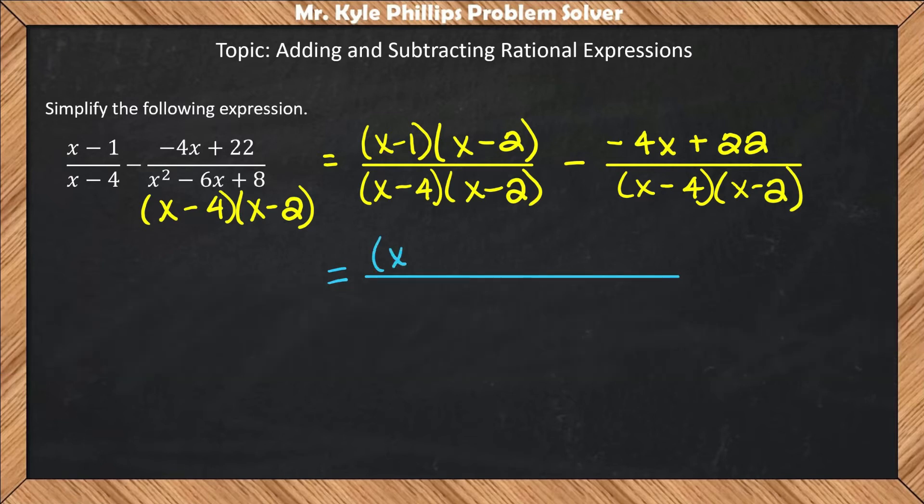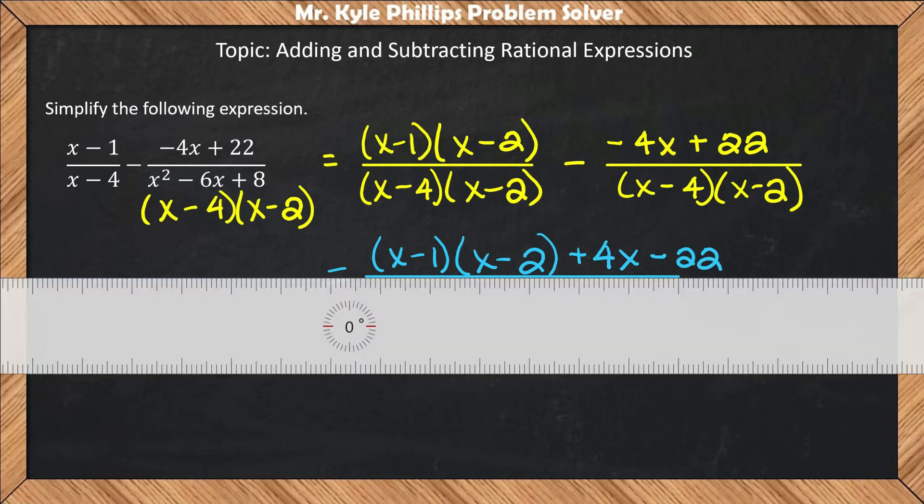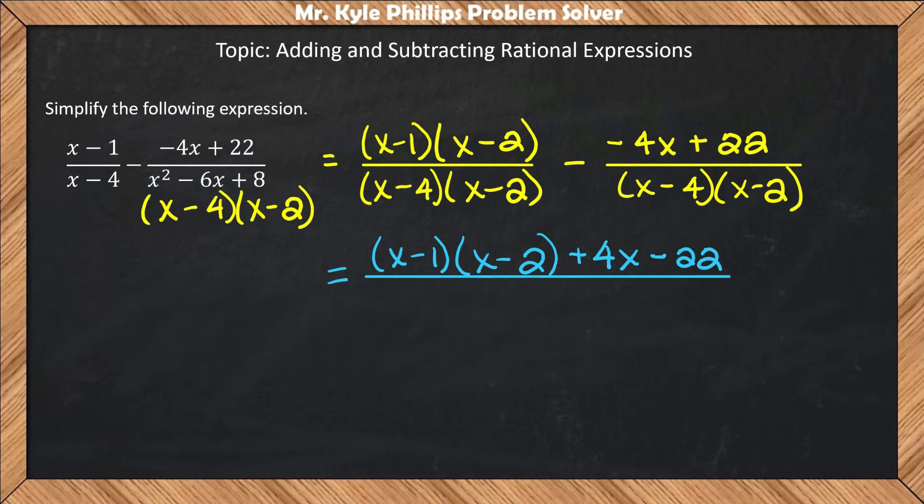So that's going to be x minus 1, x minus 2. Now here, you have minus negative 4x, so that's going to make it plus 4x. And then I have minus this 22, so that'll make this minus 22. And on the bottom, I have x minus 4 and x minus 2.